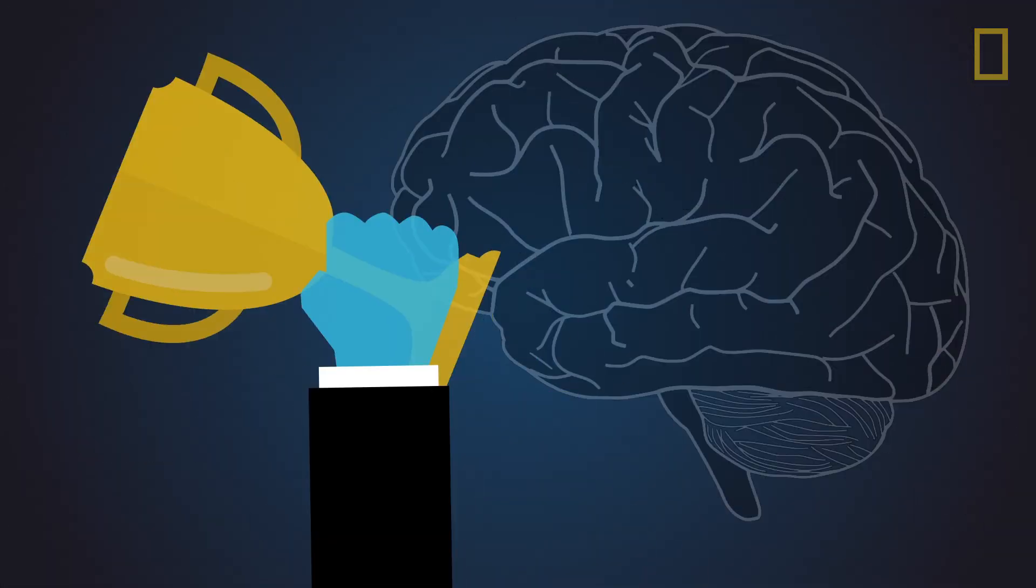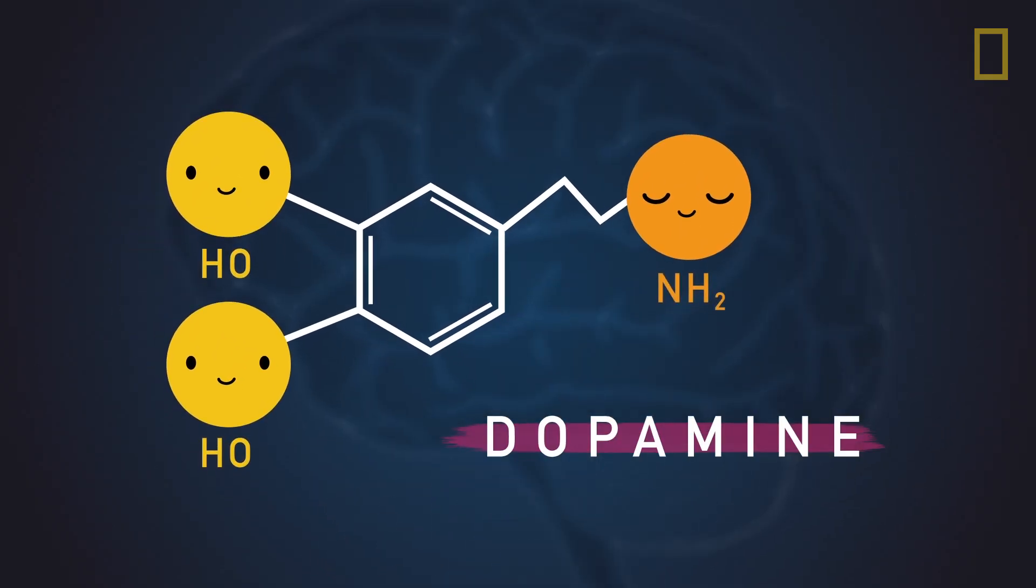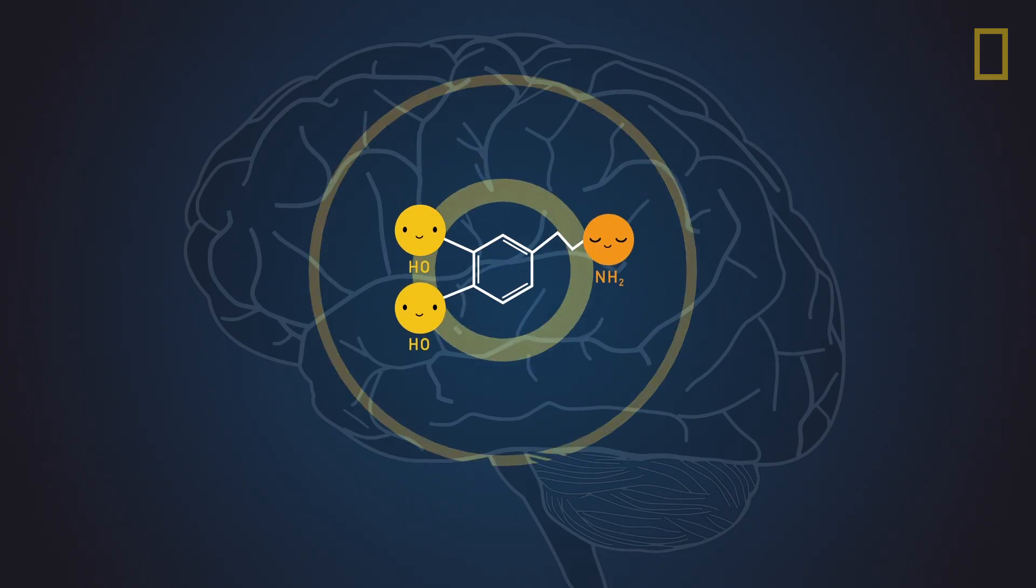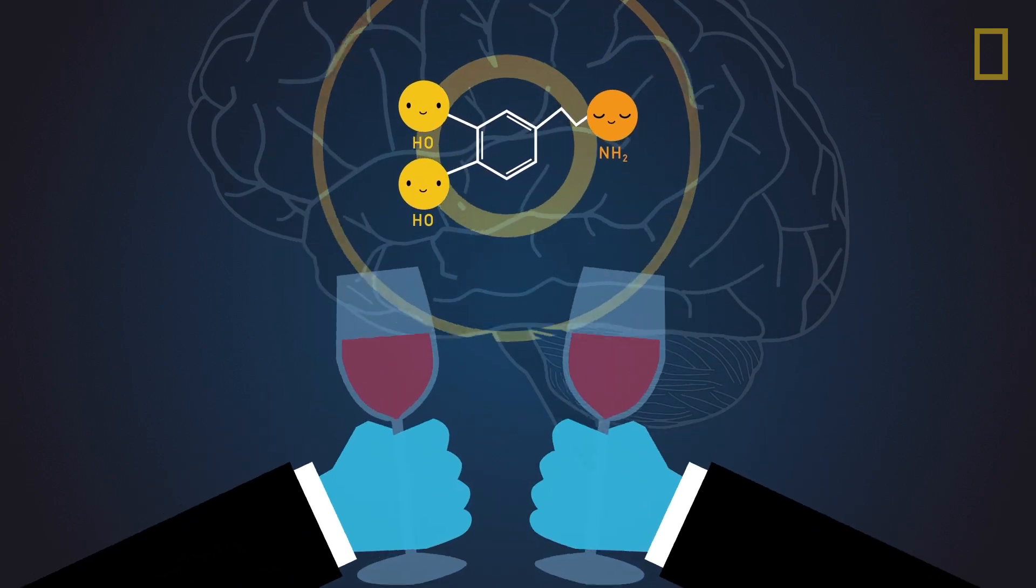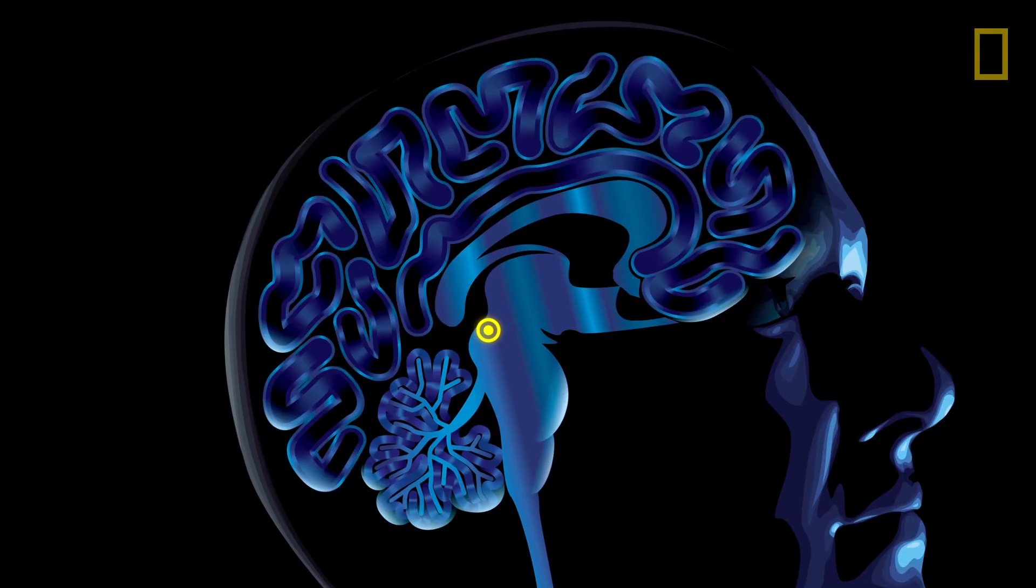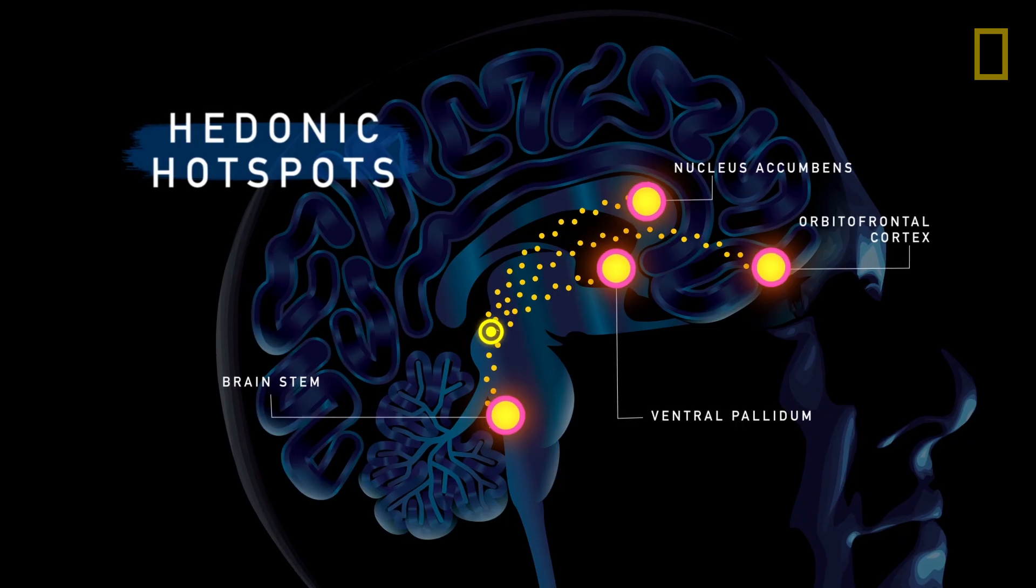Our brains evolved the reward system based on a chemical called dopamine. This amazing neurotransmitter creates cravings in us to encourage behaviors that help us survive, such as eating, procreating, or interacting socially. In turn, pleasure is then stimulated by other neurotransmitters and hedonic hotspots of the brain.